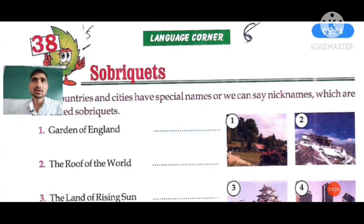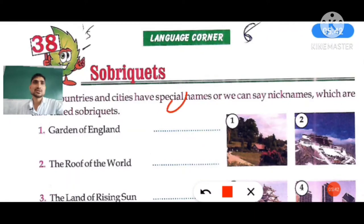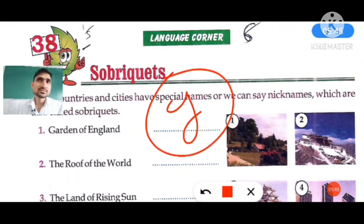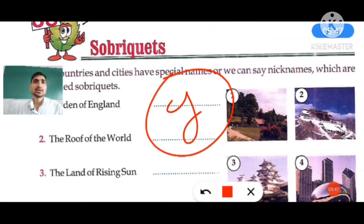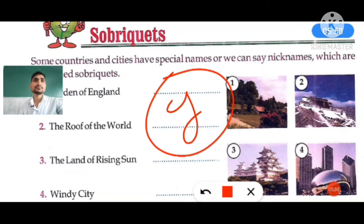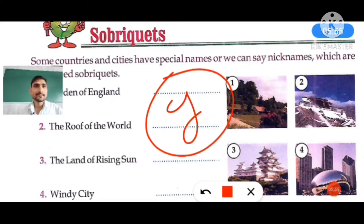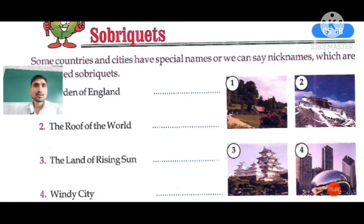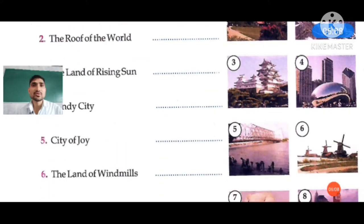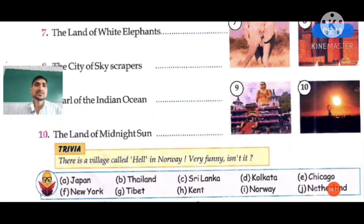Question number two: The Roof of the World is known as Tibet. You have to choose option G from the help box. Question number three: the Land of Rising Sun — which country is known as the Land of Rising Sun? The answer is Japan. You have to choose option A from the help box.